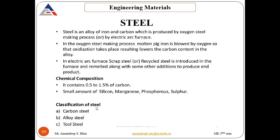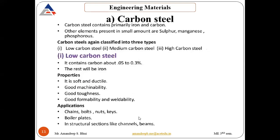Steel can be classified into carbon steel, alloy steel and tool steel. Carbon steel contains primarily iron and carbon and small amounts of sulfur, manganese and phosphorus. Carbon steel can be subdivided into three types: low carbon steel, medium carbon steel and high carbon steel. In low carbon steel, the percentage of carbon is around 0.05 to 0.3%. Properties include: soft and ductile, good machinability, good toughness, good formability and weldability.